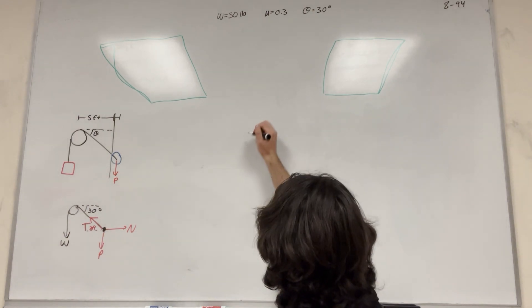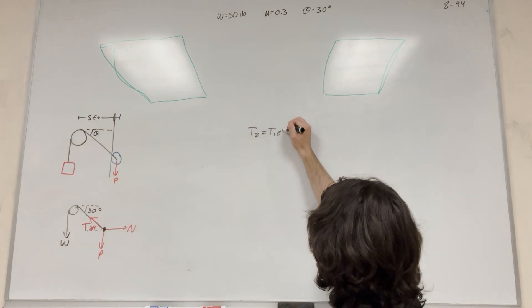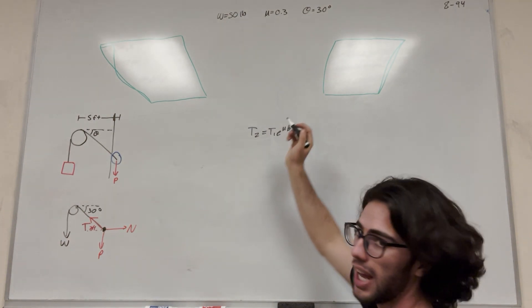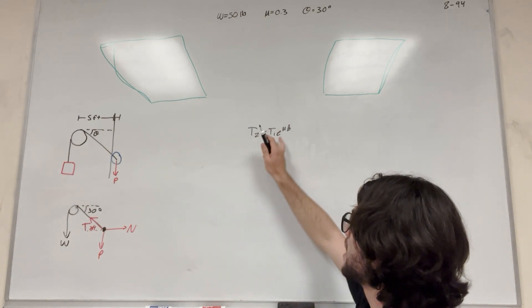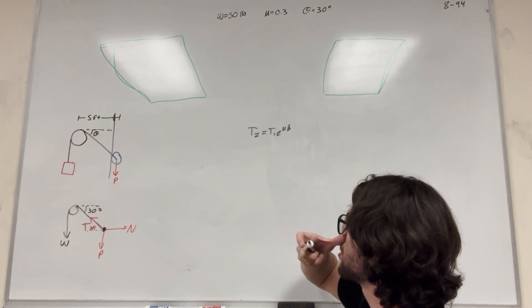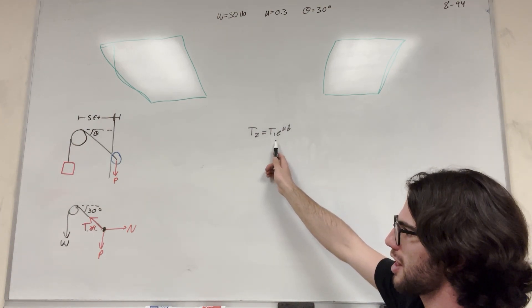So the equation we're going to use is T2 is equal to T1 E to the mu beta. Beta is the angle in radians that it touches the drum at, and then mu is the coefficient of static friction. So in this equation, T1 is the one that's resisting the motion.